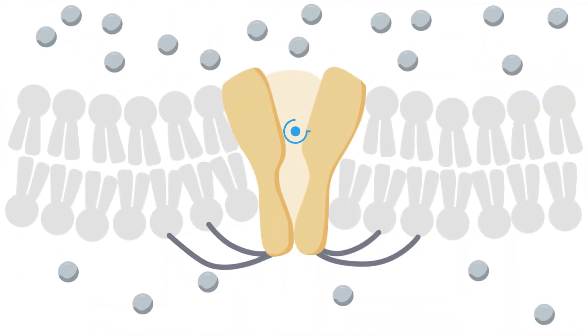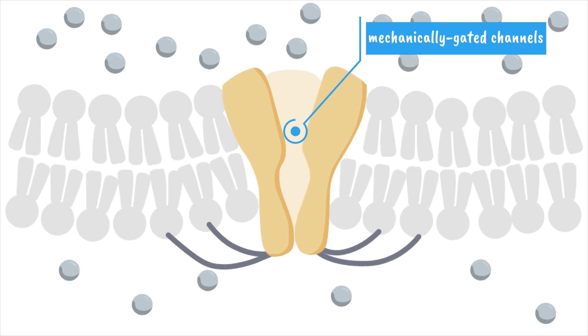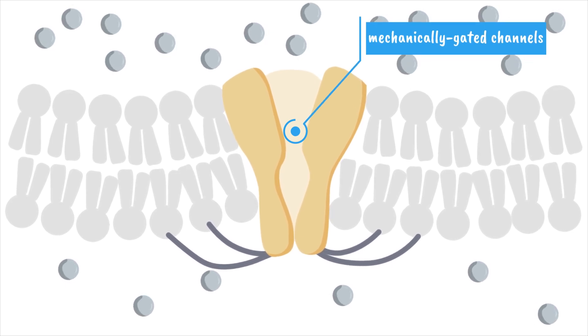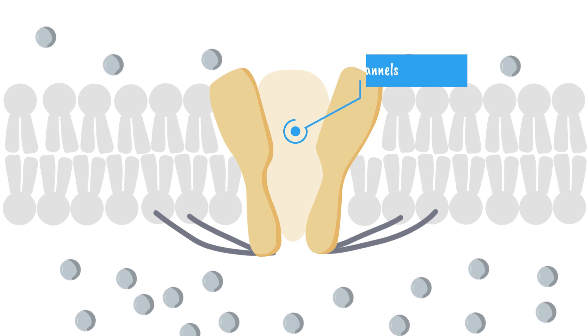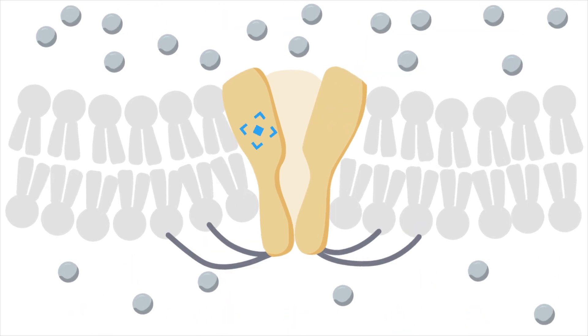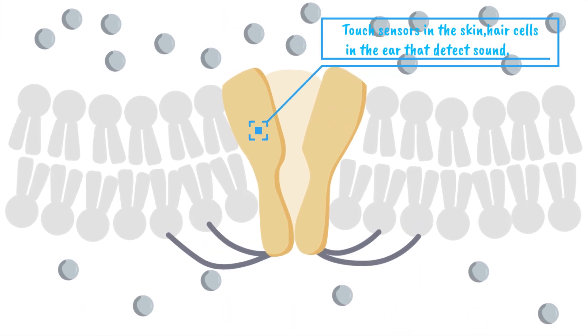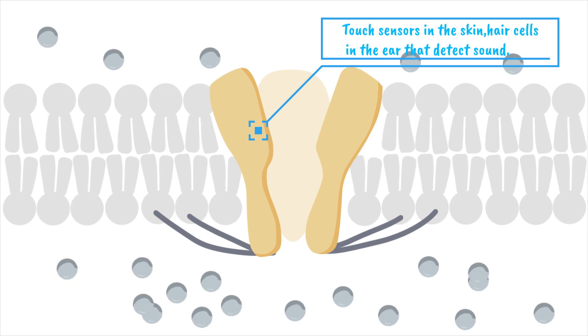There are also mechanically gated channels, which respond to physical forces like pressure, stretch, or vibration. When the membrane is deformed, these channels shift and open. You'll find these in sensory receptors, like touch sensors in the skin and hair cells in the ear that detect sound.